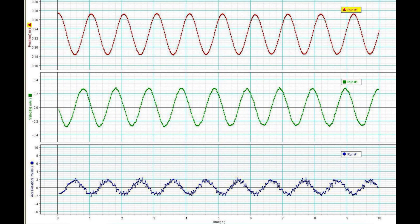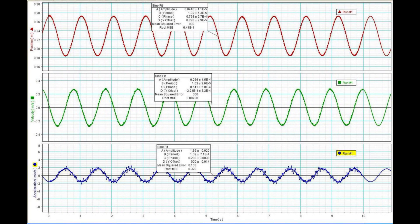Here we have position at the top, velocity in the middle, and acceleration at the bottom. Perform sine curve fits to each of the three curves, and in each case record the amplitude, period, and phase of the oscillations.